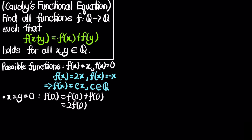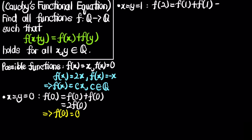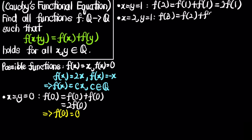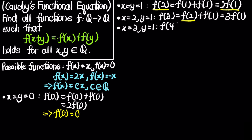Next, letting x=y=1 gives f(2) = f(1)+f(1) = 2f(1). Then letting x=2, y=1 gives f(3) = f(2)+f(1) = 3f(1). Continuing with x=3, y=1 gives f(4) = f(3)+f(1) = 4f(1), and so on. We can notice a pattern developing here.